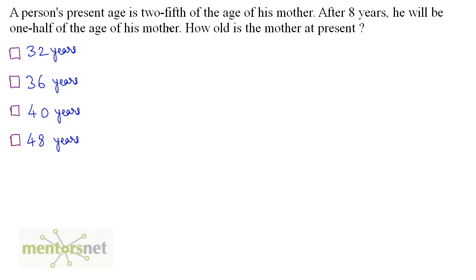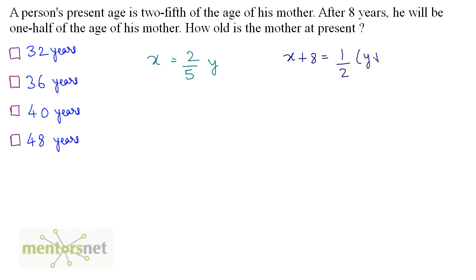A person's present age is two-fifths of the age of his mother. After eight years he will be one half of the age of his mother. How old is the mother at present? Let the person's present age be x and the mother's present age be y. So x equals 2/5 of y. After eight years, x plus 8 will be equal to one half of y plus 8. We want to find the value of y.